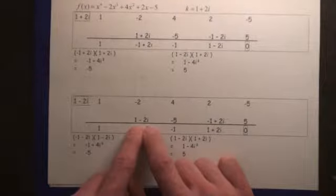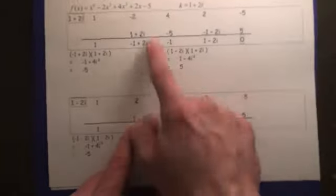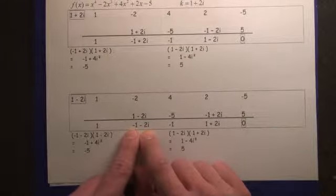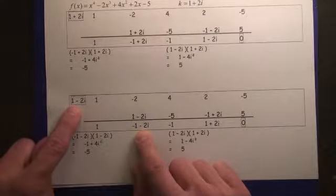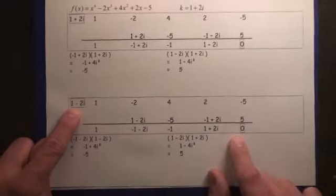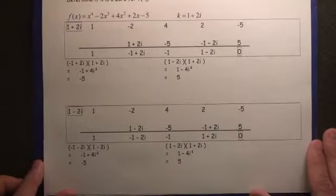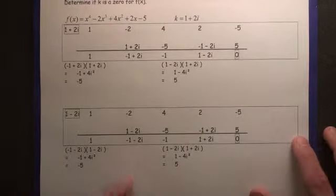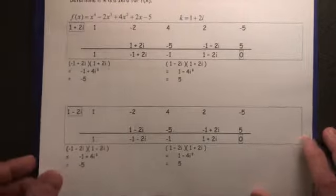That second row ends up being 1 minus 2i rather than 1 plus 2i, so you end up getting negative 1 minus 2i, which is still a conjugate. So that's why this complex conjugates theorem works out, because during the synthetic division process, basically the same thing happens.